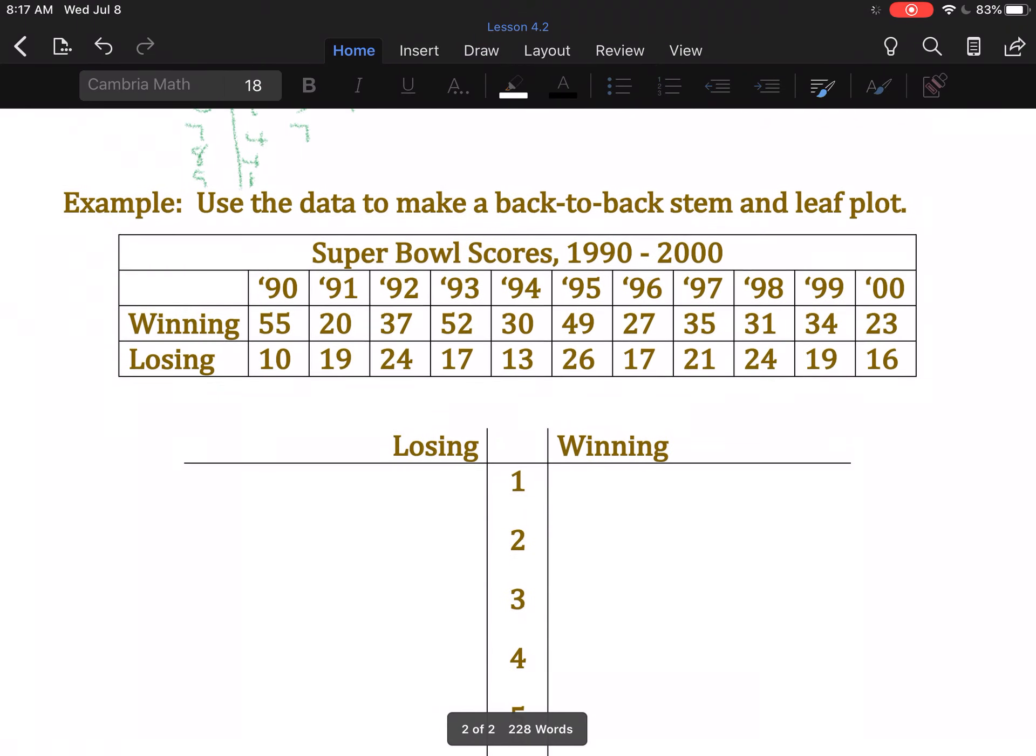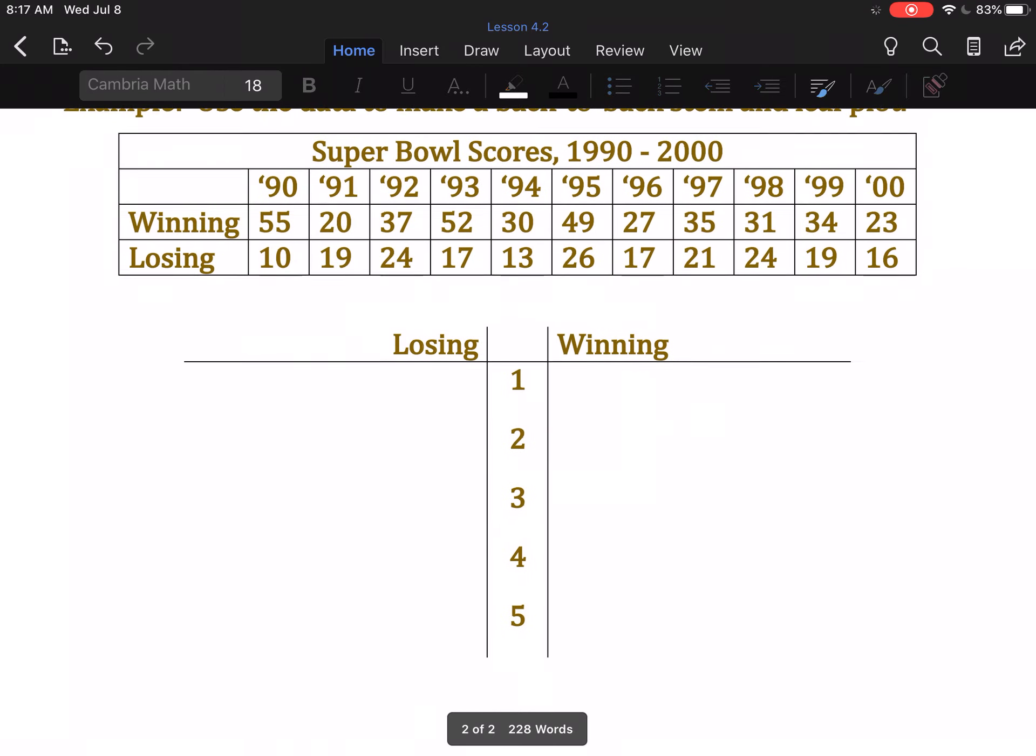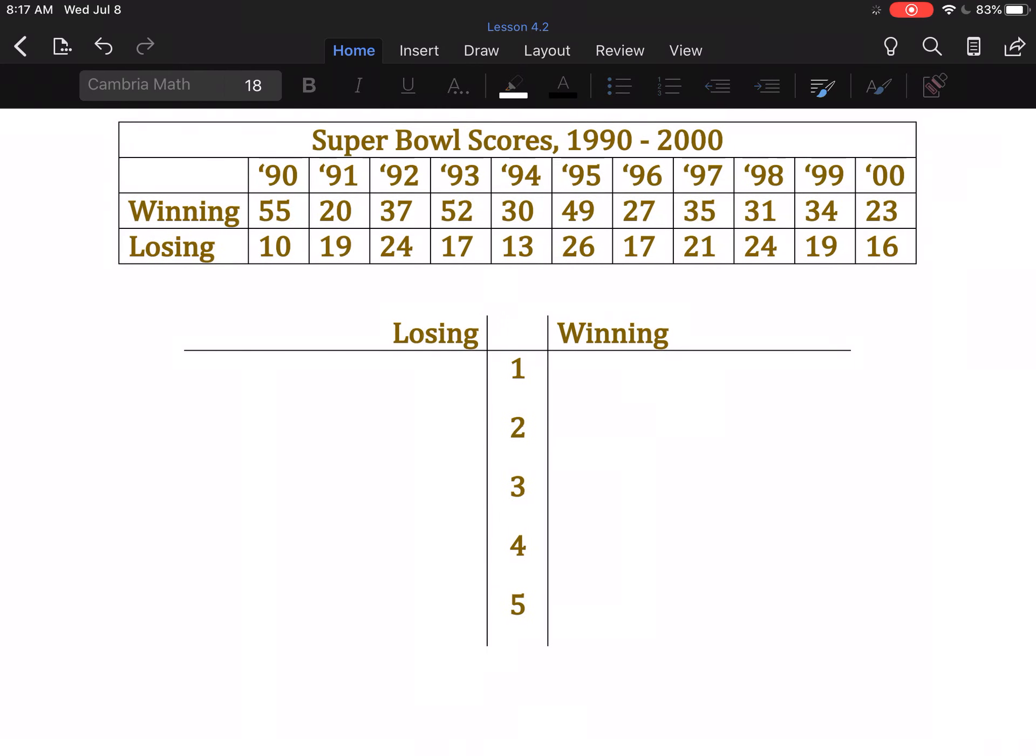So a back-to-back stem and leaf plot kind of does the same thing. So here we've got related data. Winning and losing scores from the Super Bowl for an 11-year period. So I've already filled in the stems in the middle, 1, 2, 3, 4, and 5. What we're going to do is fill in the winning and losing sides. So we're going to do winning first. And in the winning scores, there are no scores in the 10s. So the first top line, we will get to leave blank.